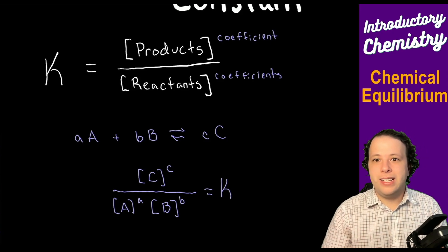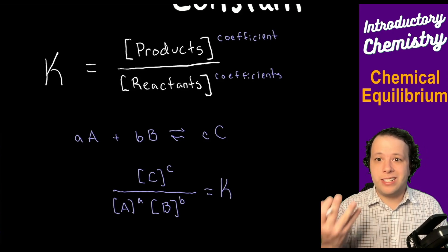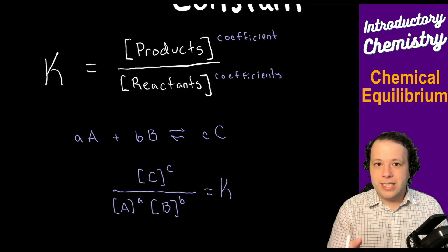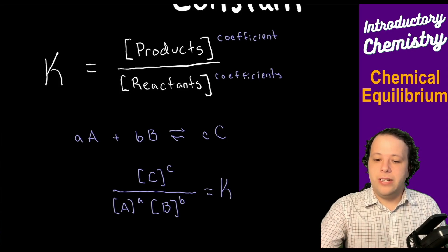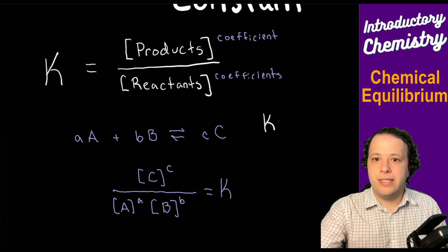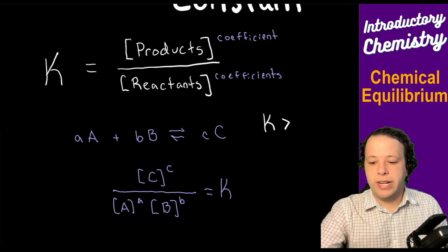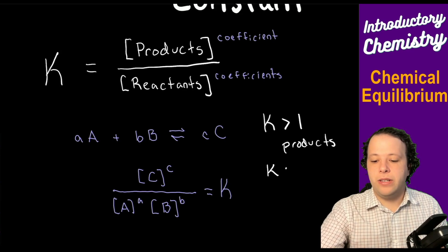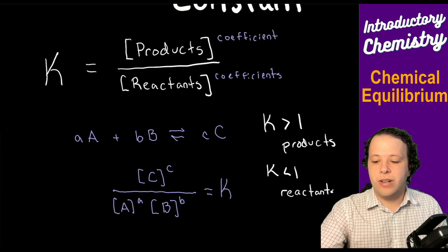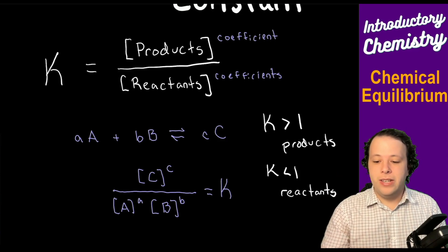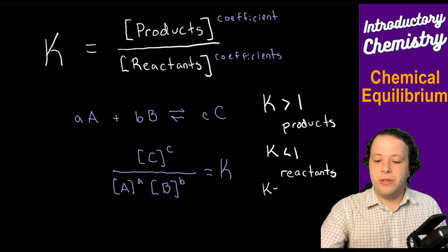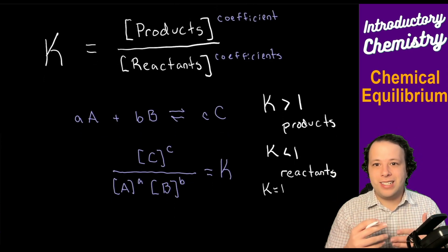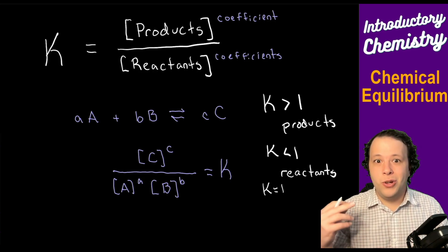One thing about K is that it comes in a bunch of different ways and represents different meanings. Depending on the size of your K value: if K is greater than one, it favors the products; if K is less than one, it favors the reactants. This has to do directly with the concentrations of each species at equilibrium. And if K is equal to one, that means both the reactants and the products are equal to each other within the reaction.